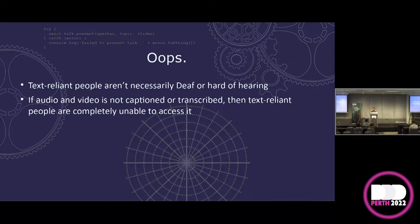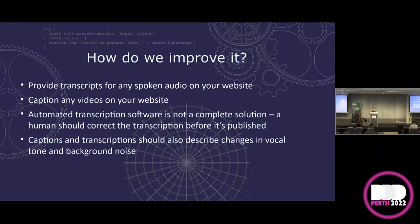This is also important because text-reliant people aren't necessarily deaf or hard of hearing. Autistic people, people with ADHD, people with sensory processing disorders, people on a busy train who want to read rather than listen, people with tinnitus — all of these people will find themselves text-reliant at some point, even if not all the time. The captions done by Netflix for Stranger Things made their way around the internet because they did a lot of things really well — describing changes in vocal tone and background noise. If you're producing complex video content, that's really important.